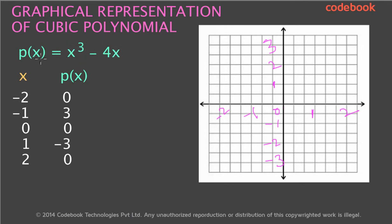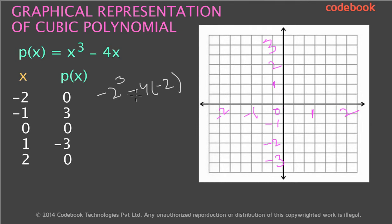Now let's compute the values of p of x for various values of x. For example, if x is equal to minus 2, the value of this polynomial becomes minus 2 cubed minus 4 times minus 2, which is minus 8 plus 8, so this is minus 8 plus 8, which is 0.